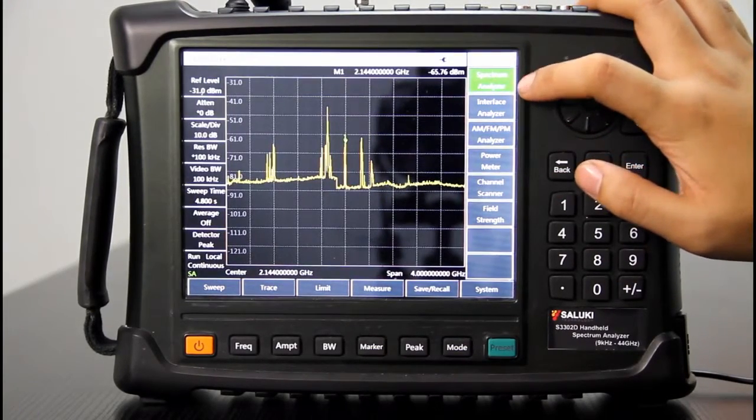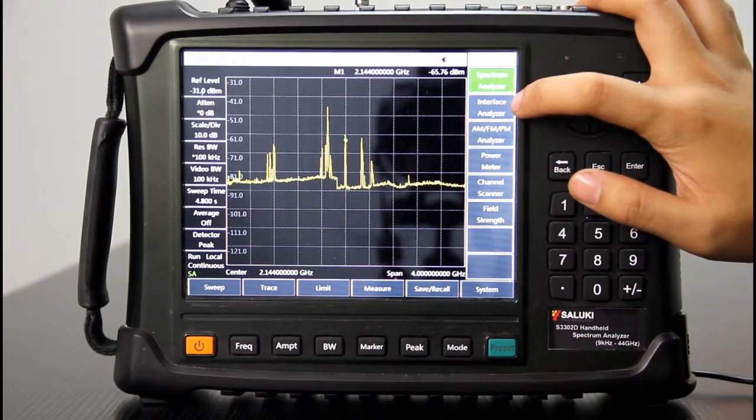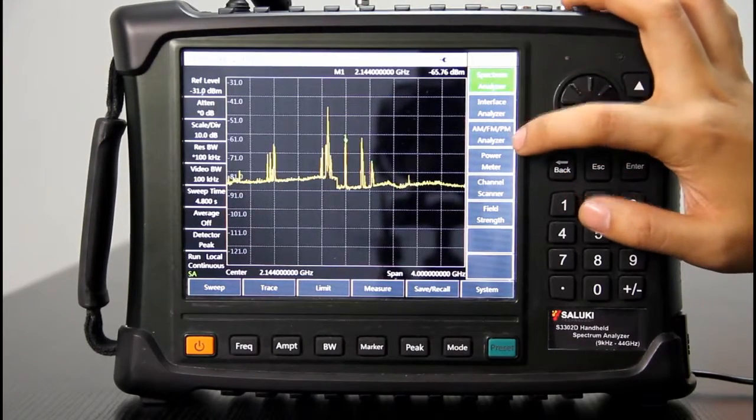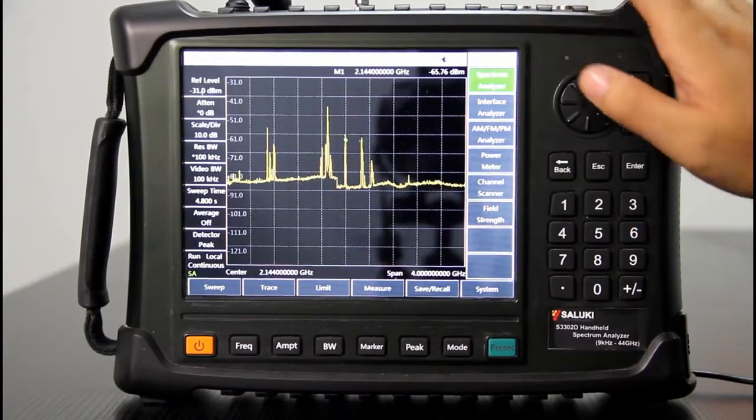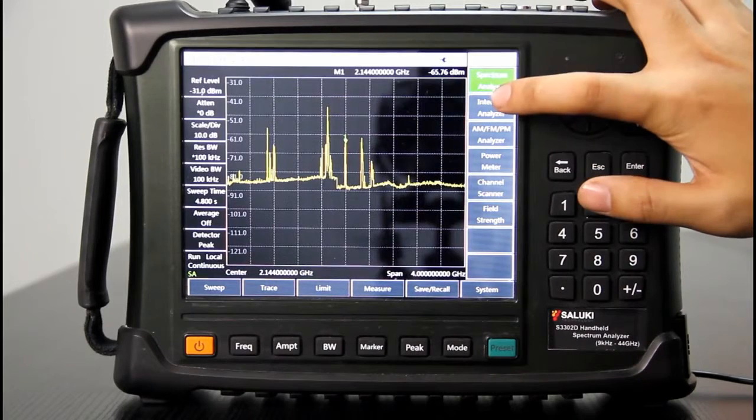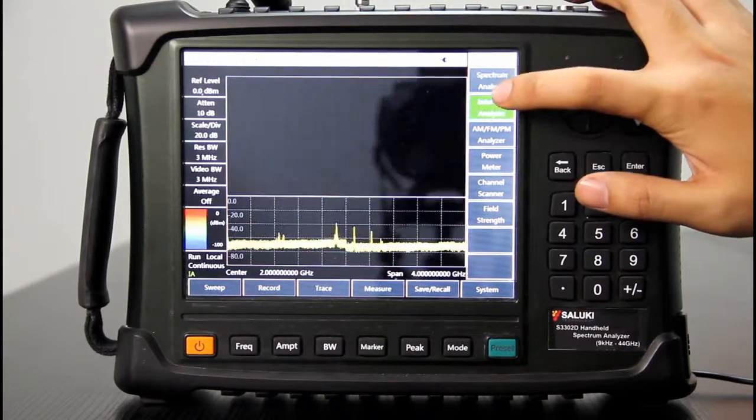The first one is the spectrum analyzer. The second one is interference analyzer. The third one is AM, FM, PM analyzer. Then power meter, channel scanner, and field screens. Let's have a look at the interference analyzer.